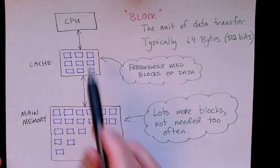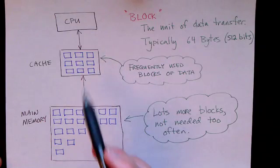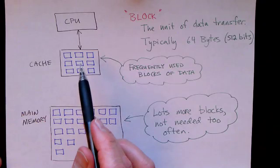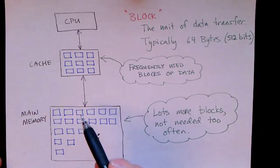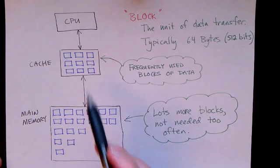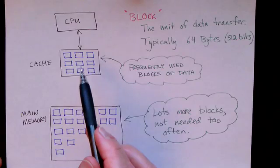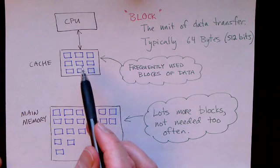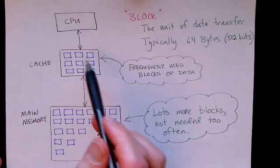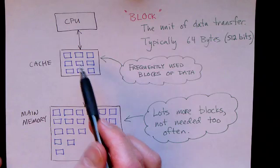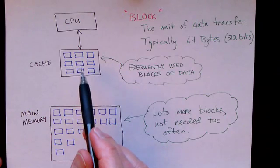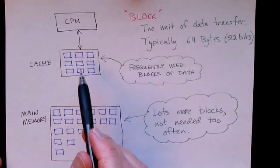However, if the CPU wants a byte that is not in the cache, then the cache will go to the main memory and get an entire block. So the cache will then keep all 64 of those bytes in its memory, and that's generally a good idea because if the CPU wants one byte from a block, it's pretty likely that it will want other bytes from that same block. So that's why the system works well.